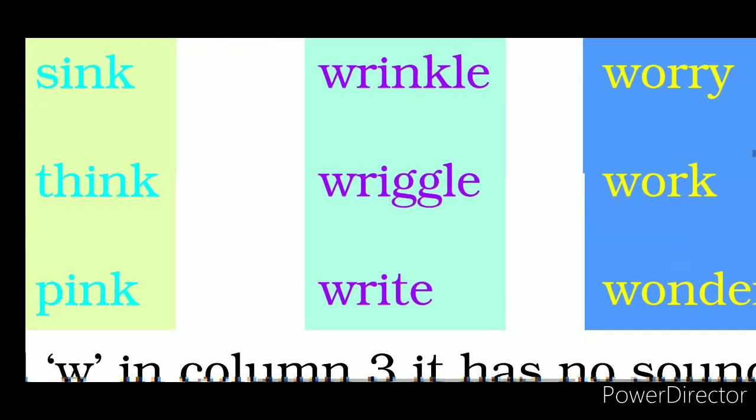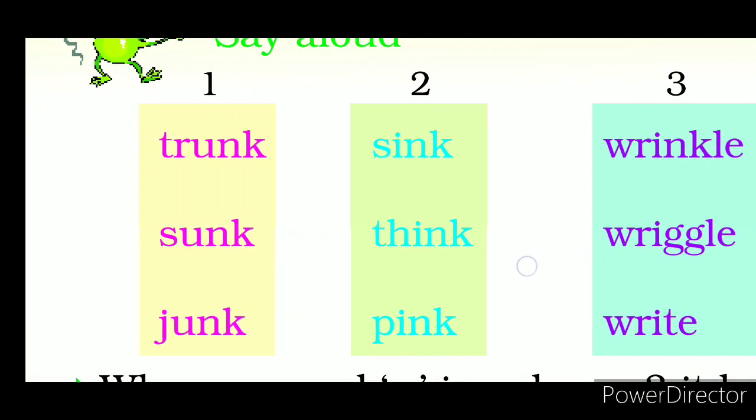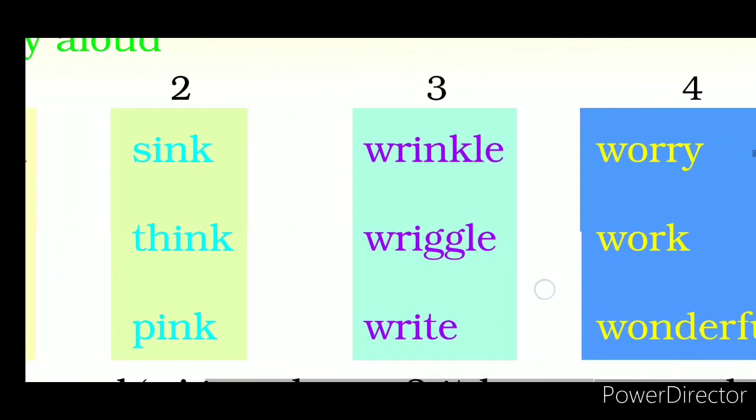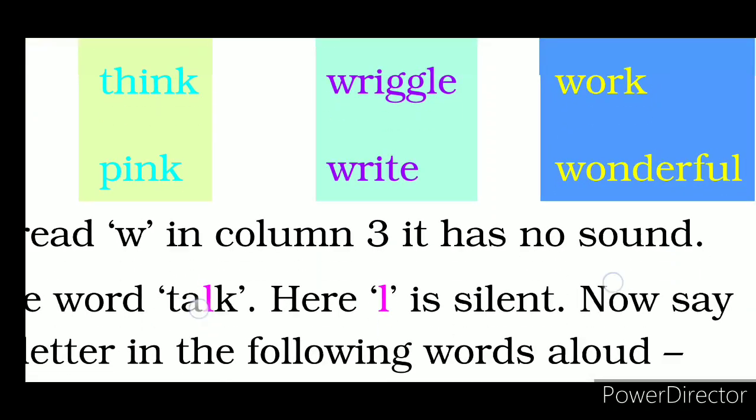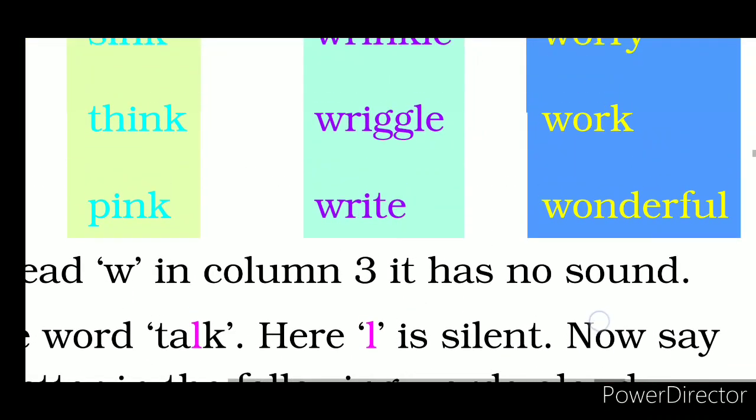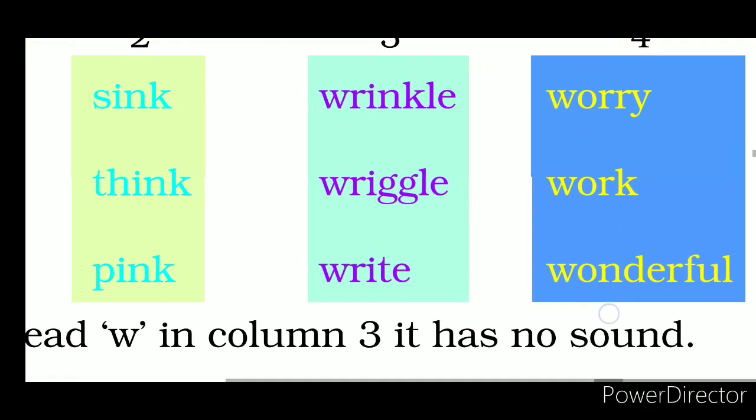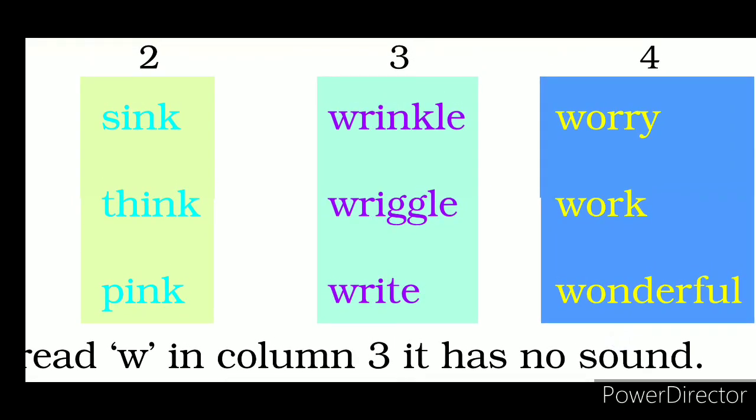You just practice these words at home and tell me how you have mastered this one. When we read W in column three it has no sound. W is silent. W is not pronounced. Like the second word starts with R-I, so it starts with ri, but W is written before it, but here W will be silent.